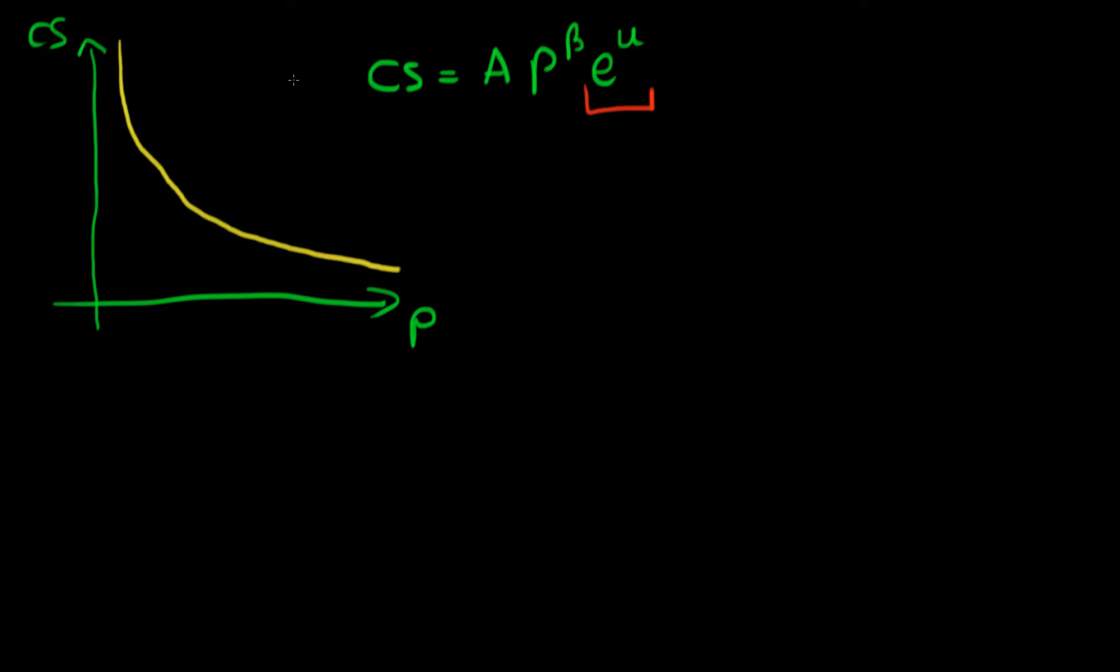So in this above model we're going to find that β is going to be less than zero. Writing this another way, we could write that car sales is equal to A₀ e^u all over ρ to the modulus of β. So this model says that as ρ tends to infinity, car sales tend to zero. So it's following this sort of curve here.